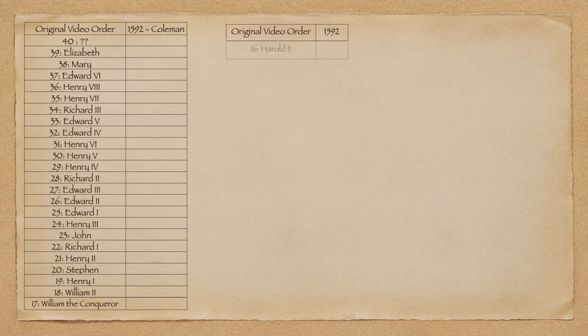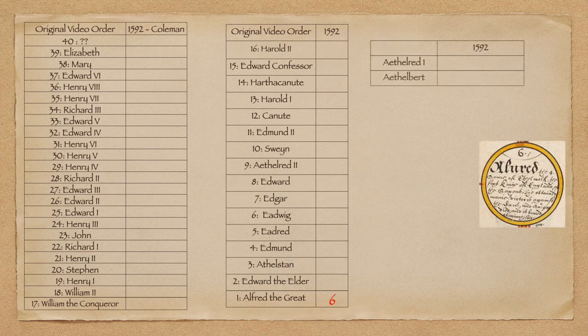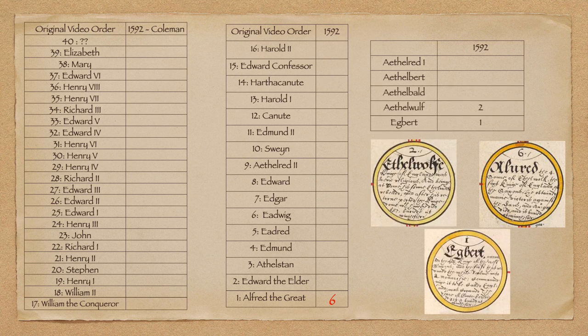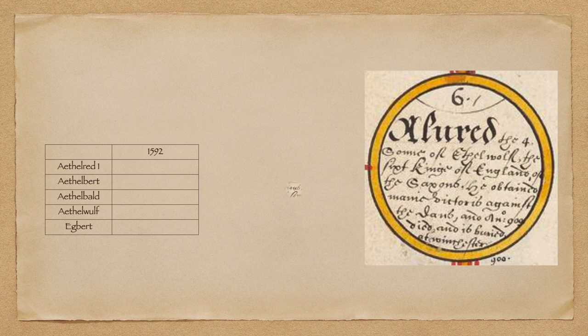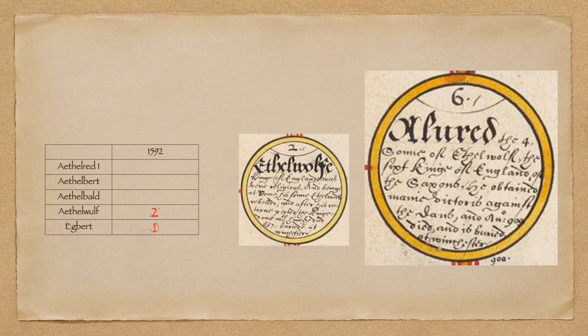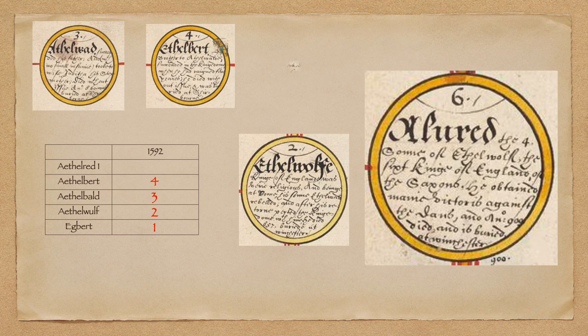So in the original video, Alfred the Great was number one, but in this genealogy for Francis Bacon he is listed as number six. Egbert is number one and Aethelwulf is number two. It would seem that whoever followed Queen Elizabeth would be the 46th monarch — and the theory ends there. But we established that Alfred the Great is sixth, meaning the third, fourth, and fifth were the sons of Aethelwulf: Aethelbald, Aethelbert, and Aethelred.